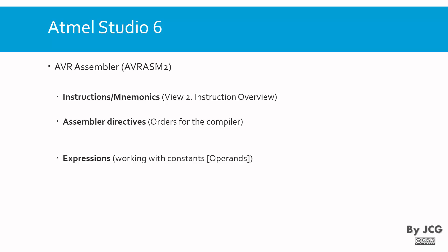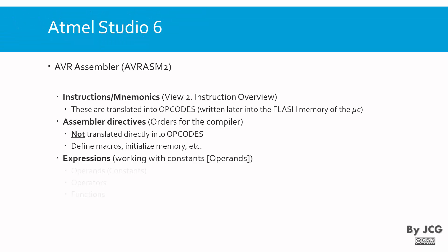In our assembler we can have different things. We can have instructions or mnemonics — the interesting part is that they are translated into opcodes, which means these instructions are going to be stored in the flash memory of the microcontroller. We also have assembler directives, which are orders for the compiler. These are not translated into opcodes, meaning they won't be stored in the flash memory. They can define macros, initialize memory, etc.